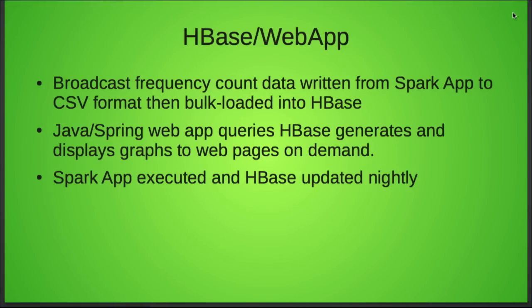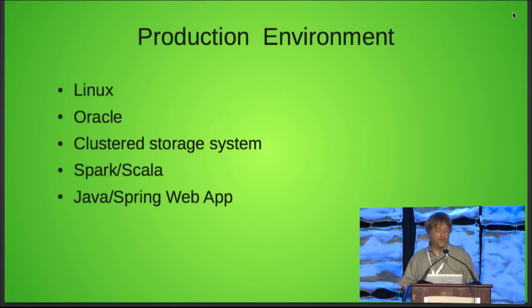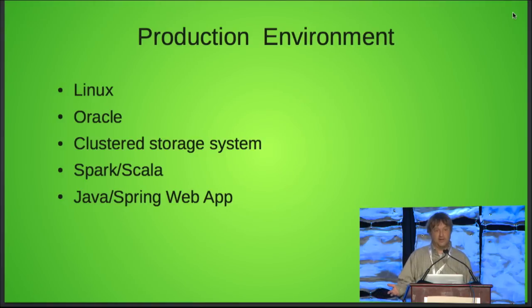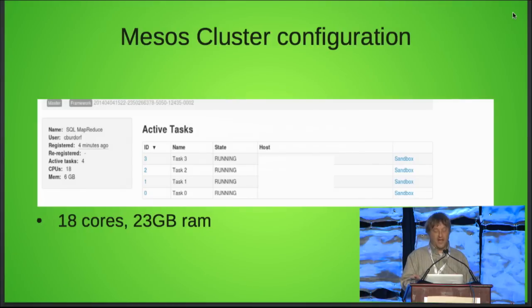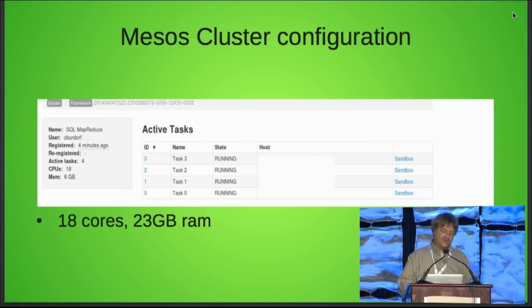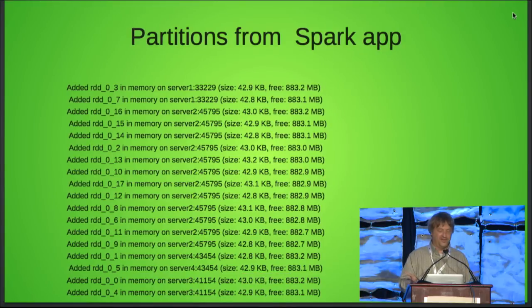This happens every night because the data is constantly changing, constantly getting updated and cleaned. The production environment is Linux — basically a group of Linux servers — along with a large Oracle system, a clustered storage system to store terabytes of media files, Spark using the Scala API, and a Java Spring web application. We're also using Mesos as a cluster manager. Compared to what some other people here are using, it's maybe kind of a small cluster, but it works quite well. You can see that Mesos and Spark are doing a nice job of partitioning the data across the various servers.